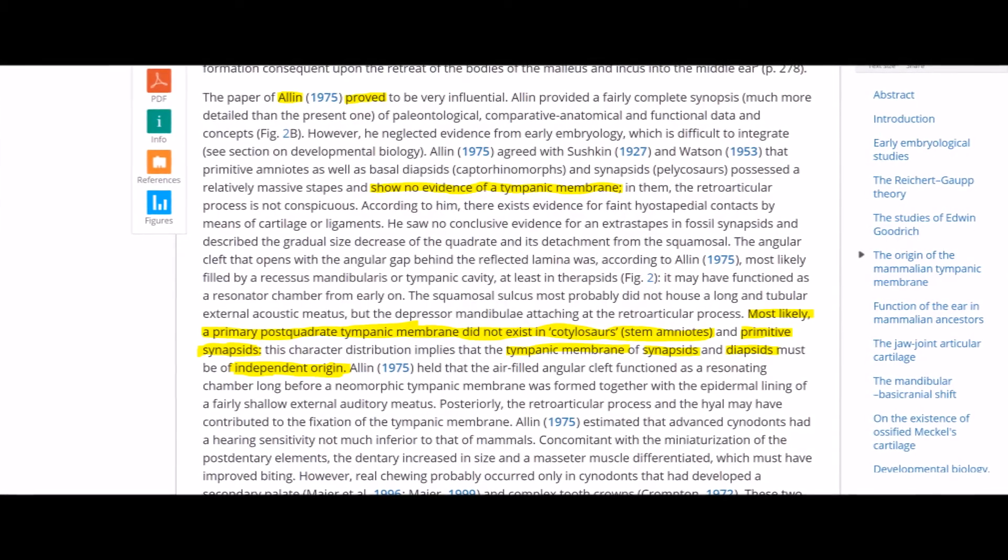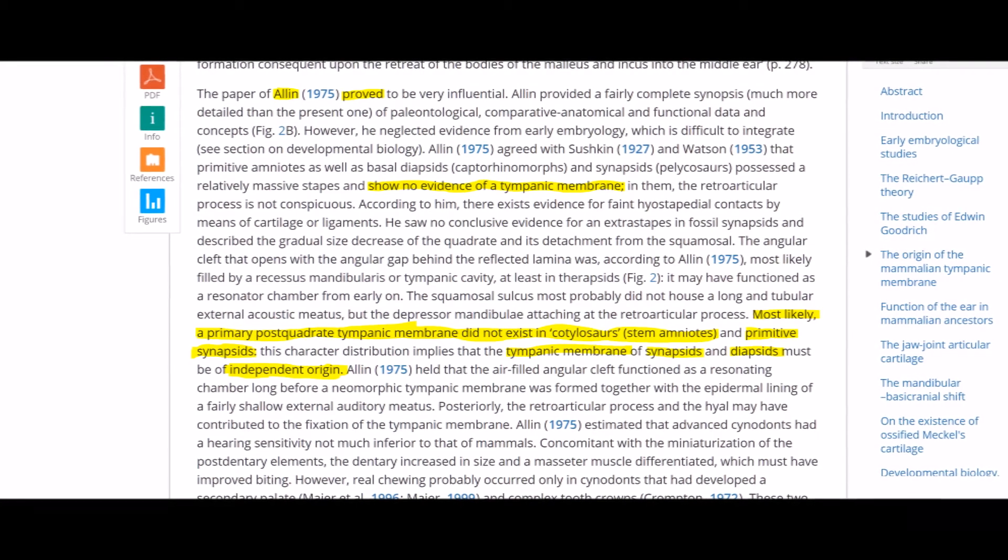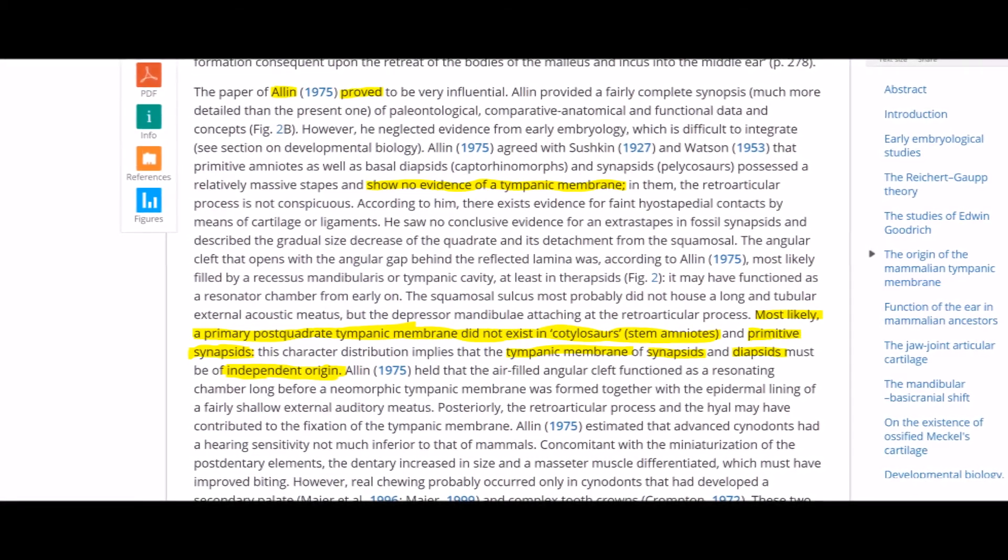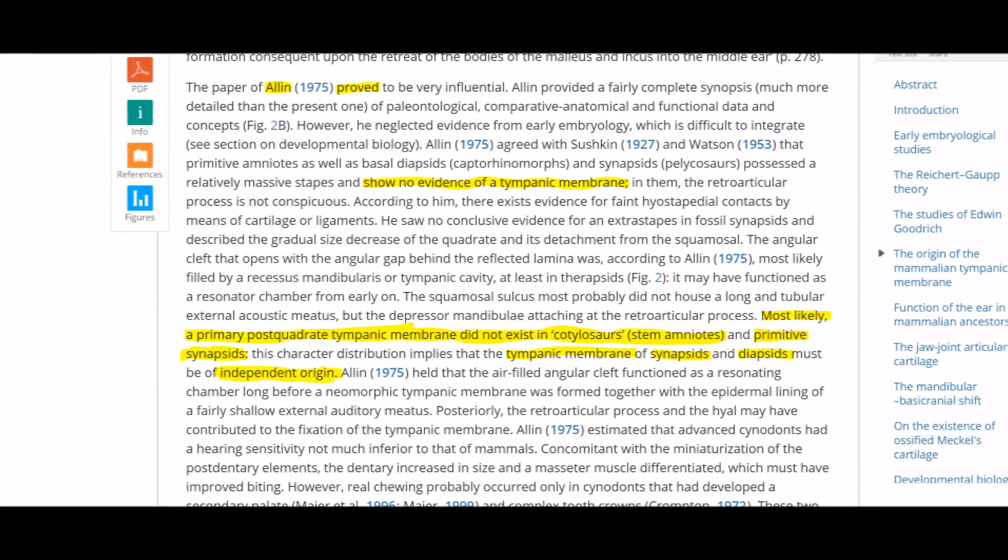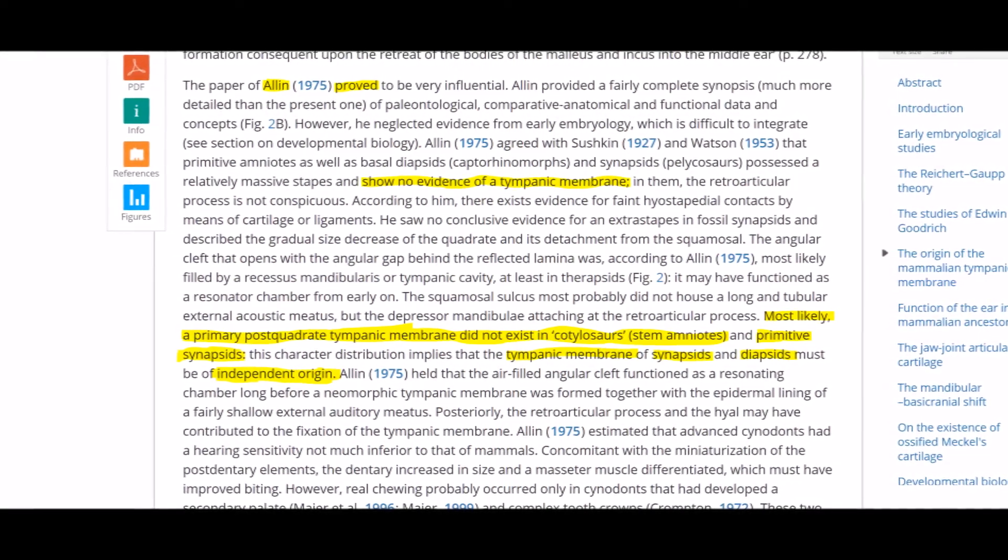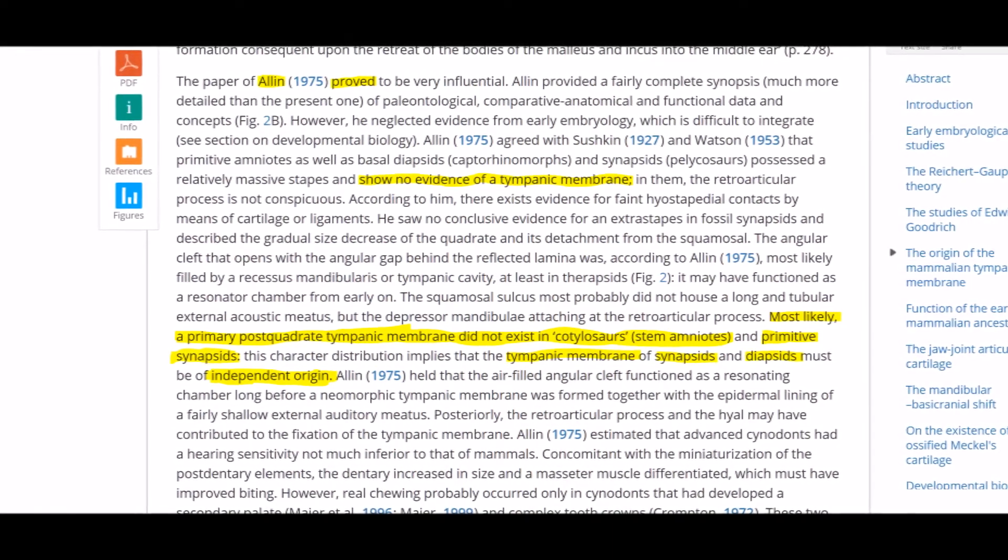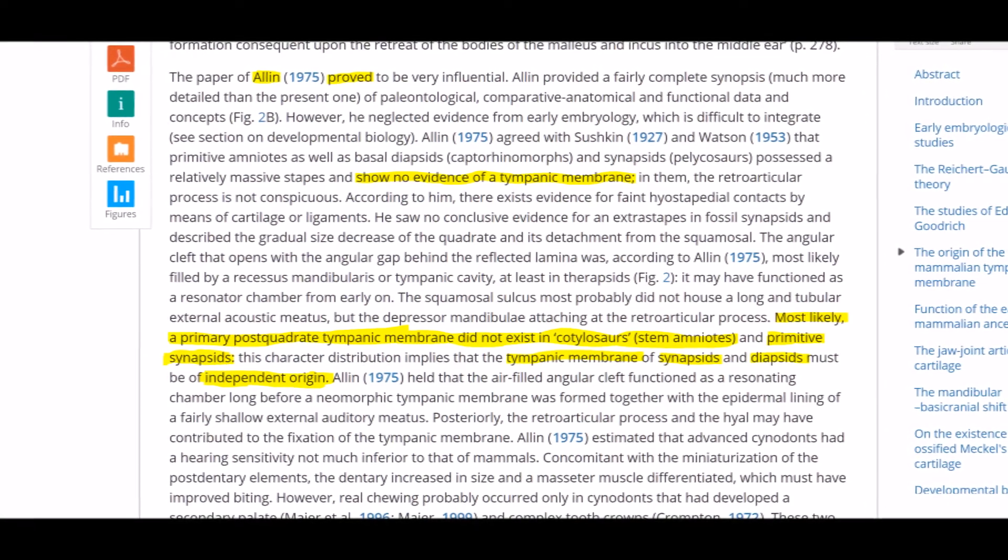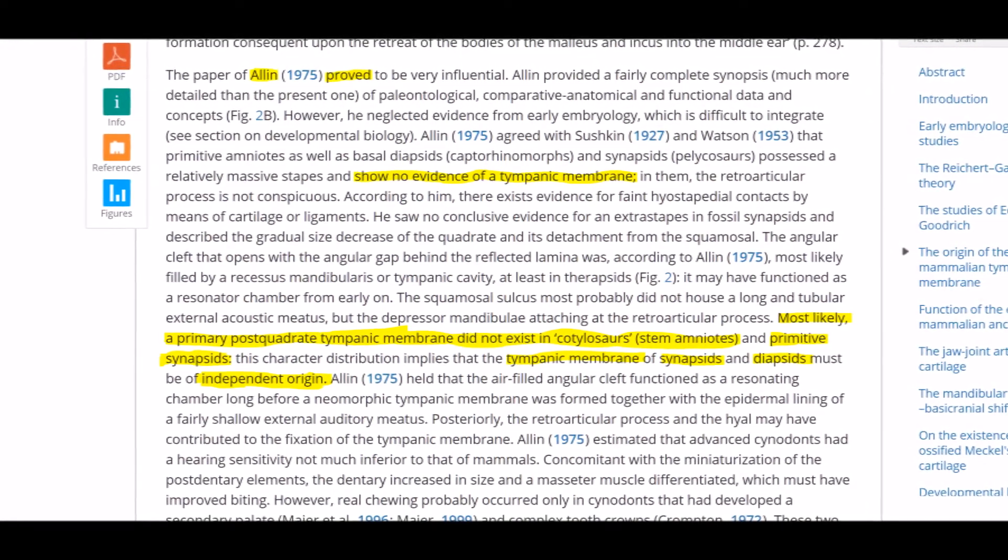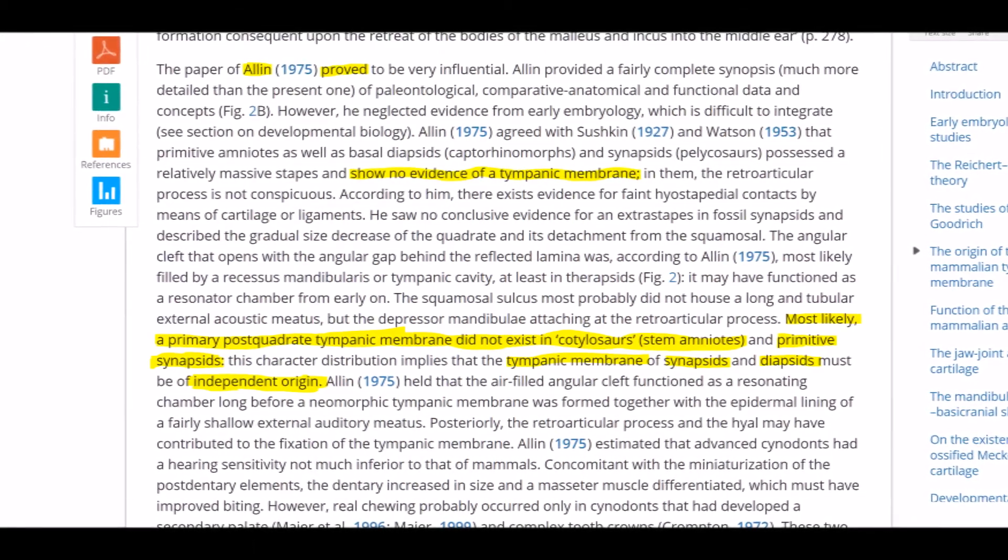On the contrary, there appears to be a gap in the fossil record that puts this into question. In 1975, an influential paper written by Allen reported that the tympanic membrane did not actually exist in the common ancestor of synapsids nor reptiles. It also found to be lacking in stem groups as well. He found that even though they had massive stapes, it seemed to play a role more on the jaw than it did on air sound vibrations.